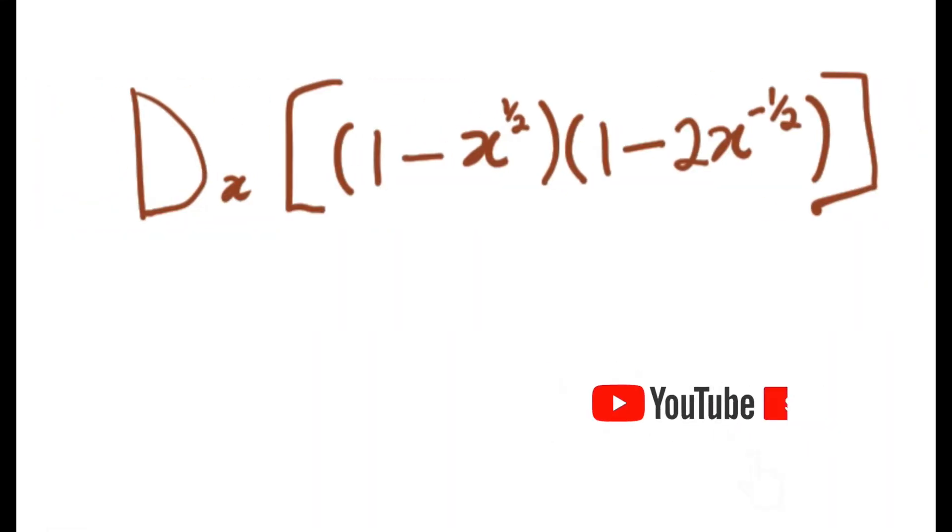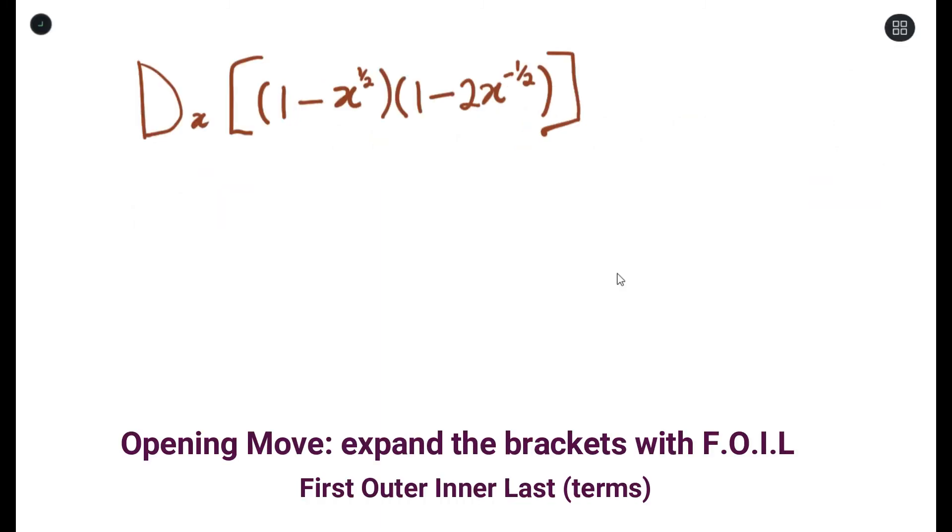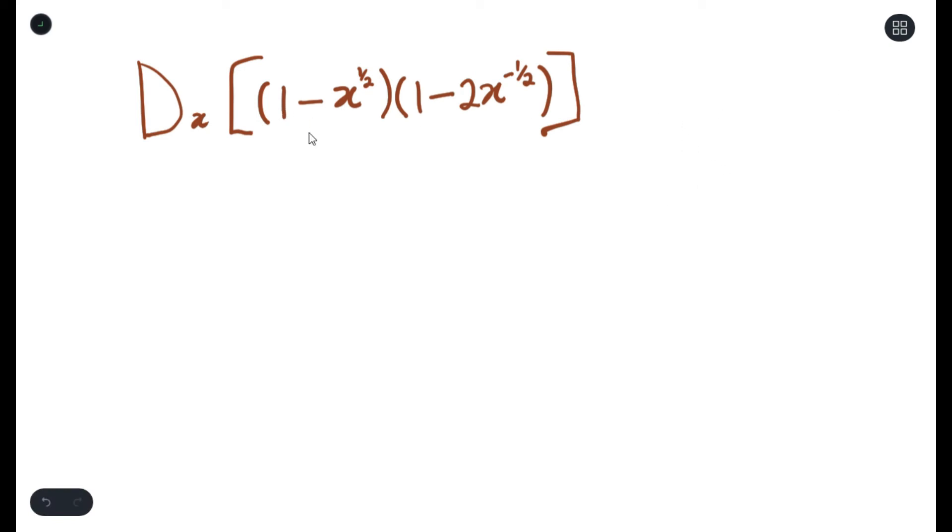Now this question wants us to find the derivative of (1 minus x to the power half) times (1 minus 2x to the power negative half). To answer this question, we need to expand the bracket, so we will FOIL. Opening this bracket you will get 1...